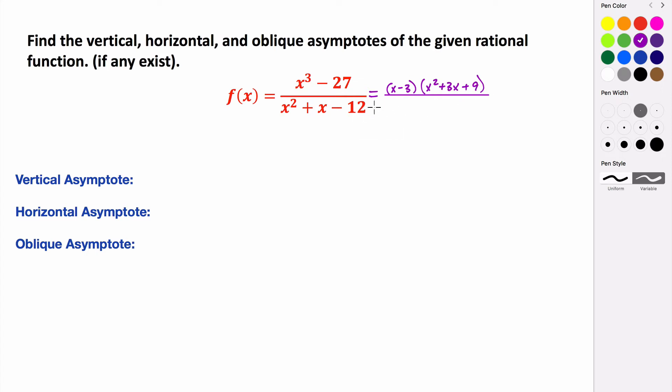And then the denominator here factors to be x minus 3 times x plus 4. So we know that from our denominator, we get domain restrictions. So we know that x minus 3 cannot equal 0, and we know that x plus 4 cannot equal 0. So x cannot equal 3, and x cannot equal negative 4.